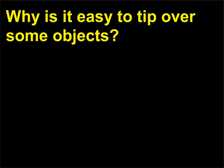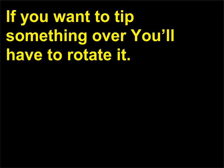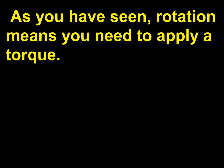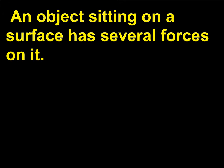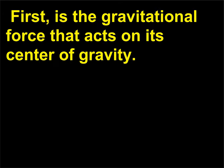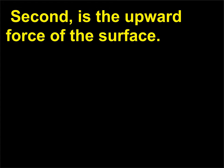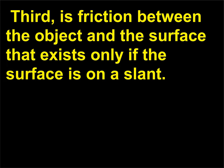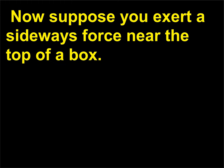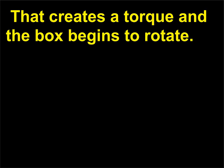Why is it easy to tip over some objects? If you want to tip something over, you have to rotate it, which means you need to apply a torque. An object sitting on a surface has several forces on it: the gravitational force acting on its center of gravity, the upward force of the surface, and friction between the object and the surface that exists only if the surface is on a slant. If you exert a sideways force near the top of a box, that creates a torque and the box begins to rotate.